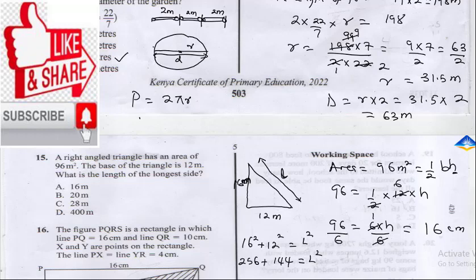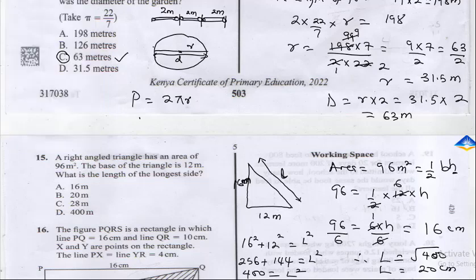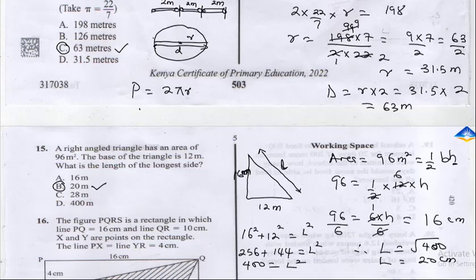Summing this up: 256 plus 144 gives us 400, which equals L squared. Therefore, L is going to be the square root of 400. Square root of 400 is 20, so our L is going to be 20 cm. The correct answer here is B.